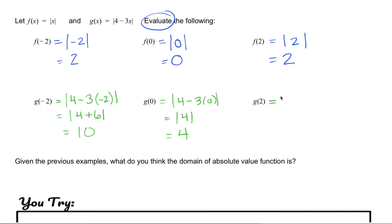And the last one, g of two, four minus three times two. The absolute value of four minus three times two is the same as the absolute value of four minus six. Four minus six is negative two, and the absolute value of negative two is positive two.